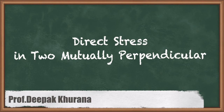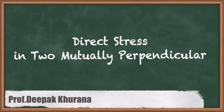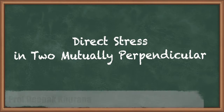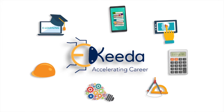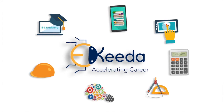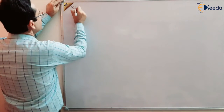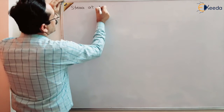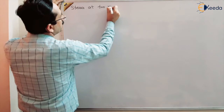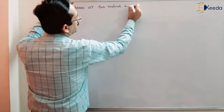Now, let us take the second case in which the normal stresses are acting at two perpendicular planes. Our aim is to find out the normal stress and shear stress at an angle theta at an oblique section to this stress element. So, stresses at two mutual perpendicular planes.